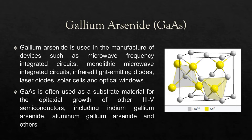Gallium arsenide is used in the manufacture of devices such as microwave frequency integrated circuits, monolithic microwave integrated circuits, infrared light-emitting diodes, laser diodes, solar cells, and optical windows. GaAs is often used as a substrate material for the epitaxial growth of other group III-V semiconductors, including indium gallium arsenide, aluminum gallium arsenide, and others.